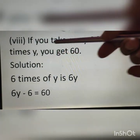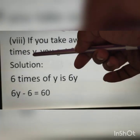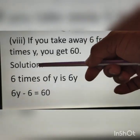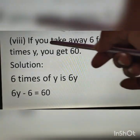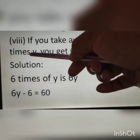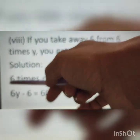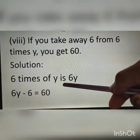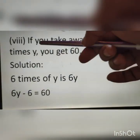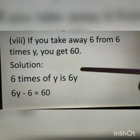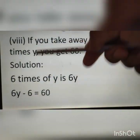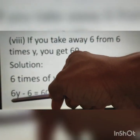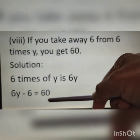Question number 8: if you take away 6 from 6 times y, you get 60. Let the number be y. It is given: if you take away 6 from 6 times y, so 6y. Take away means we are subtracting from that. So 6y minus 6 is equal to 60. Therefore, the equation is 6y minus 6 is equal to 60.